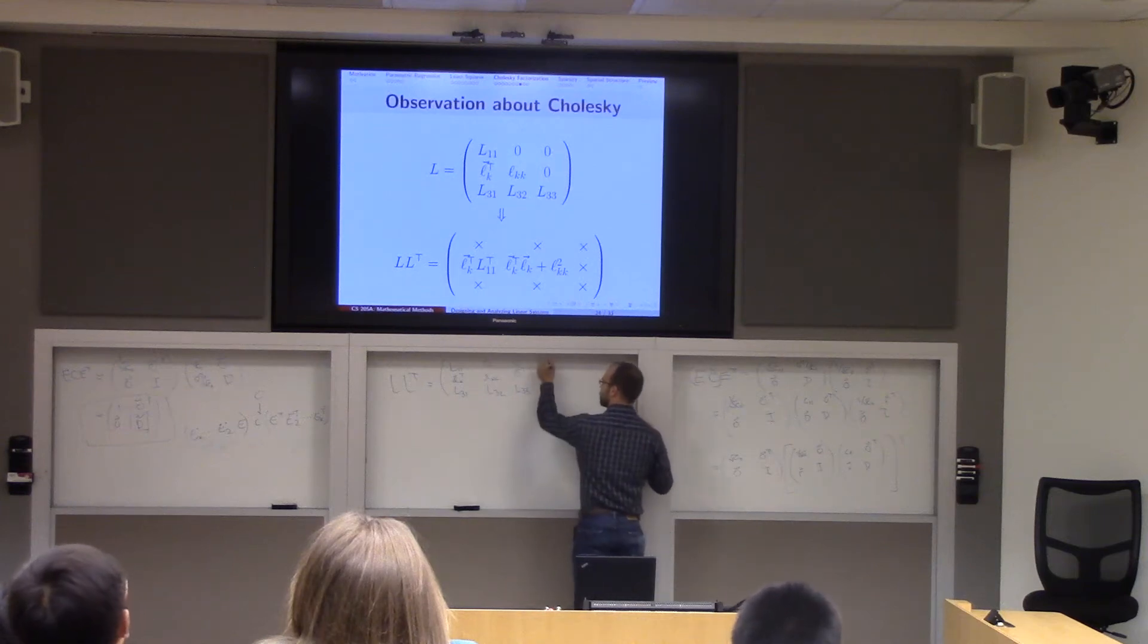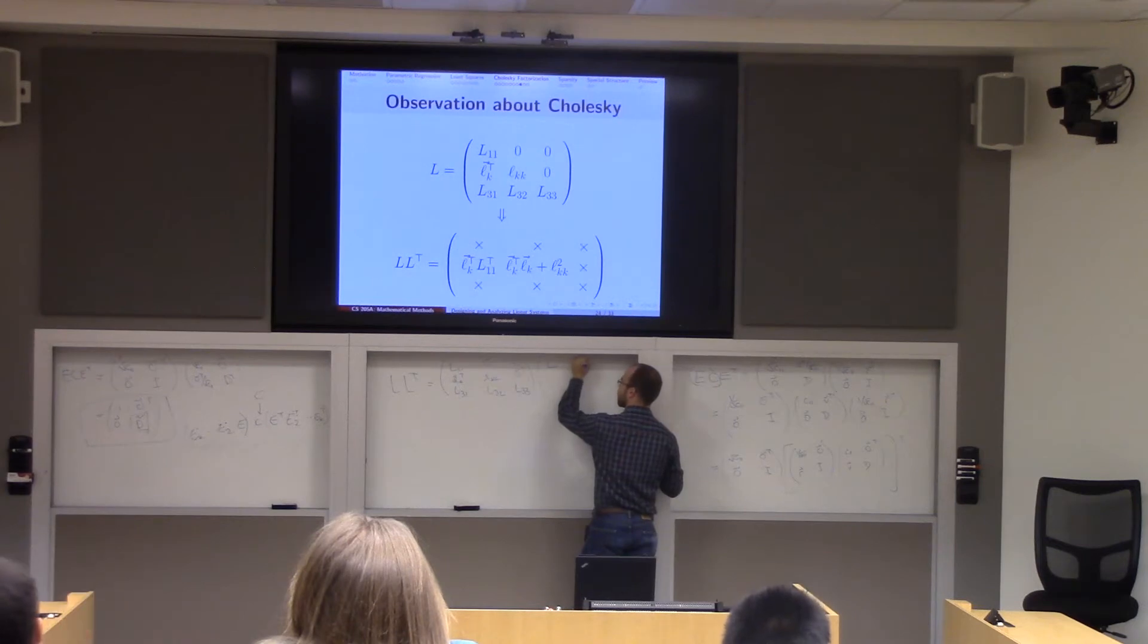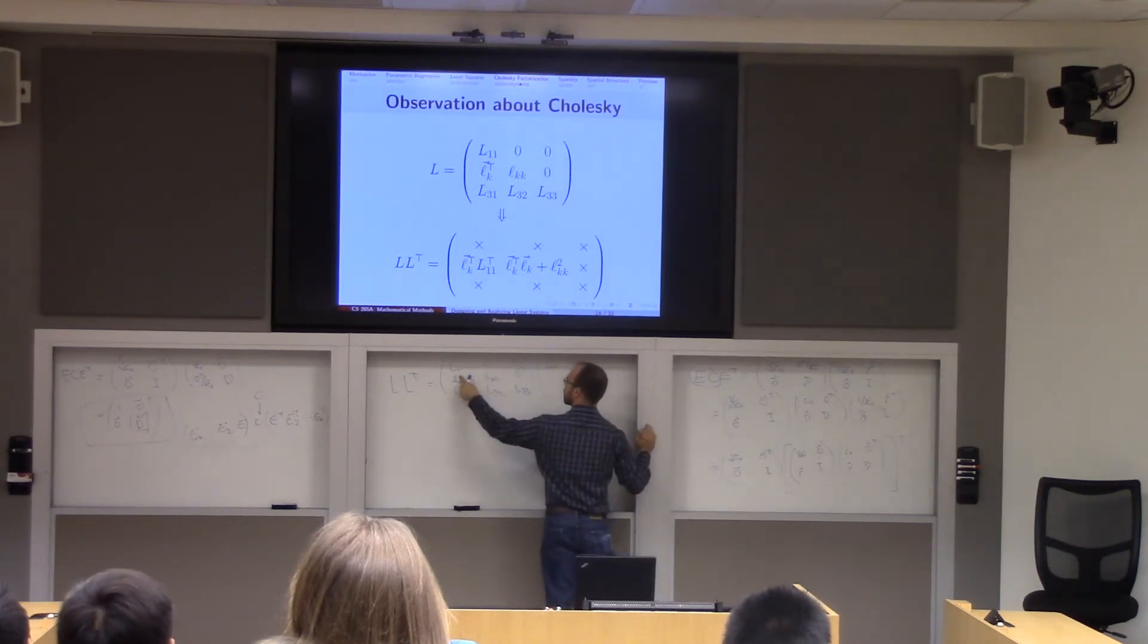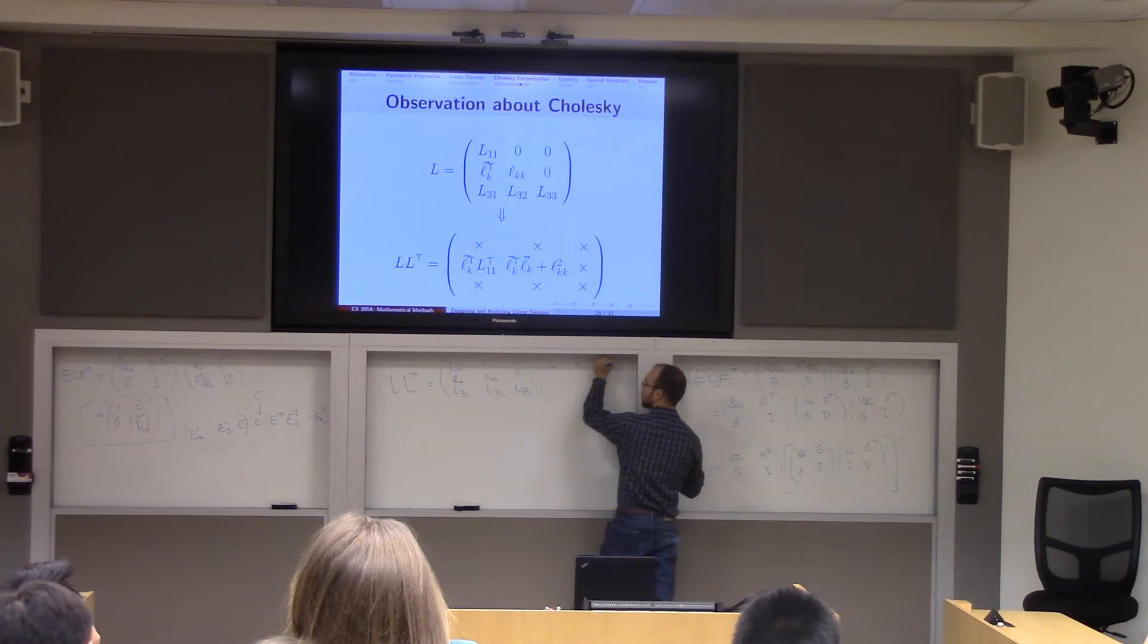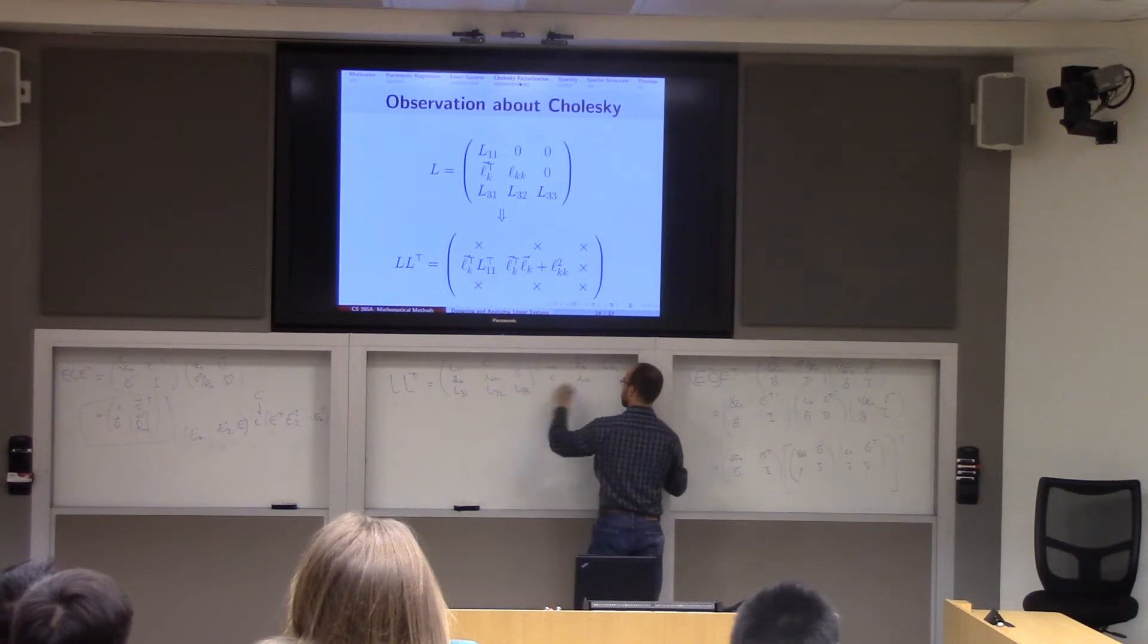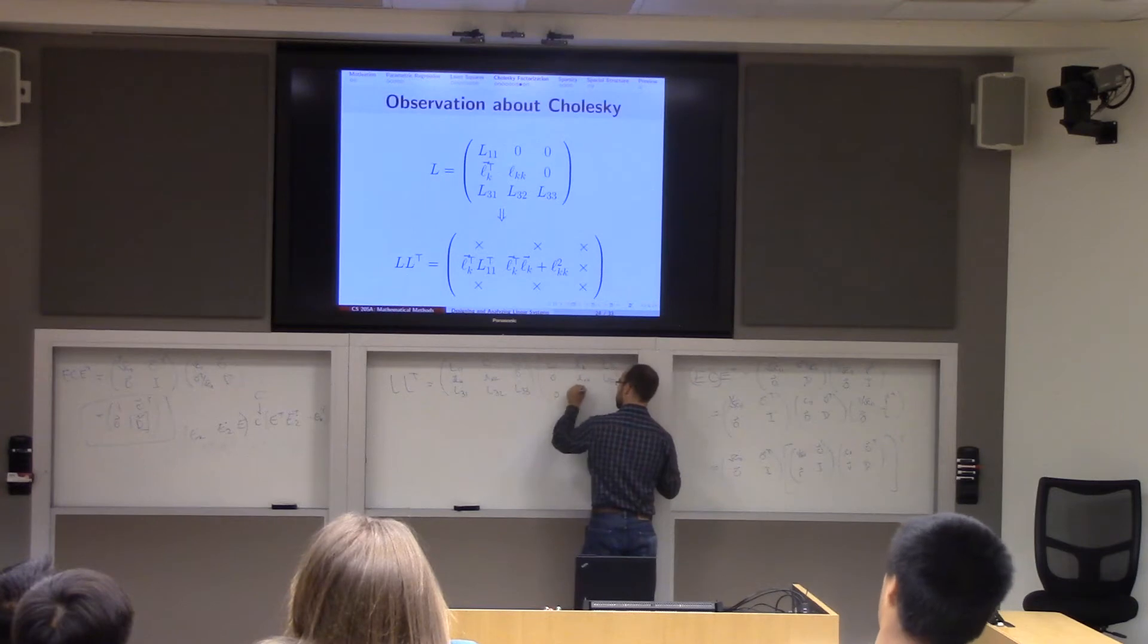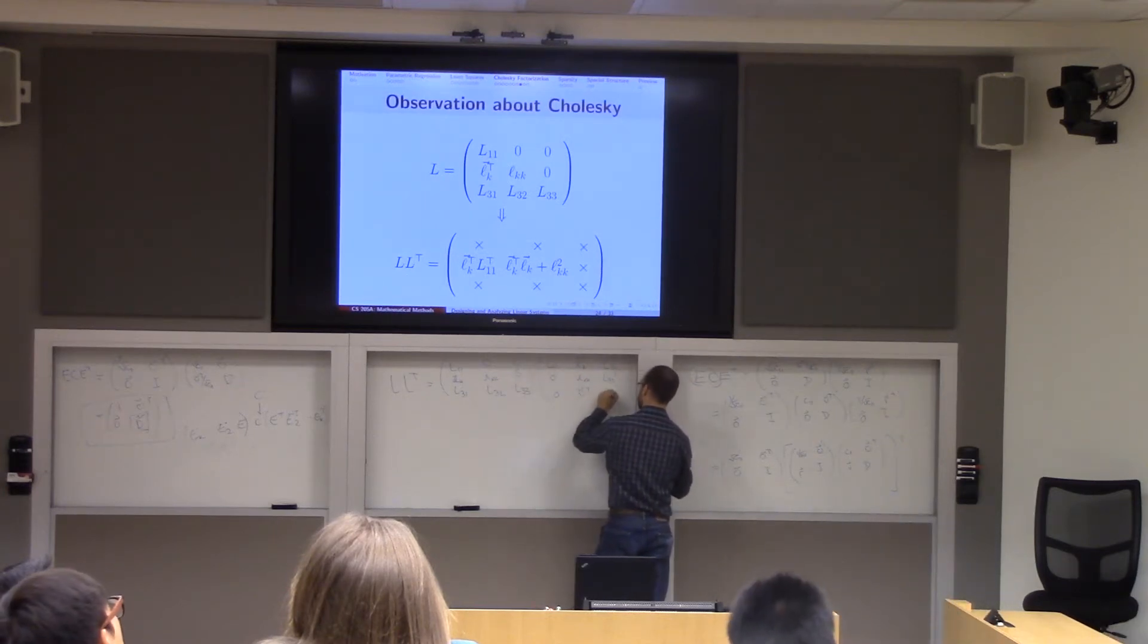So this is where I'm likely to get it wrong. So we have L11 and then LK, oh, there's no transpose there, transpose, and then L31 transpose, and then you'll get 0 LKK L32 transpose, and then 0, 0, vector transpose, and then L33.